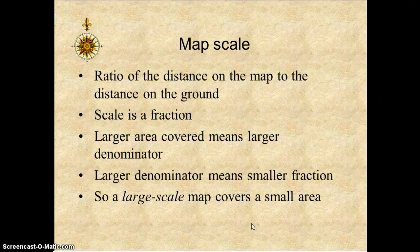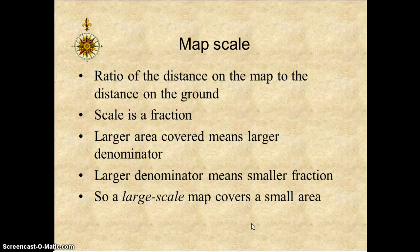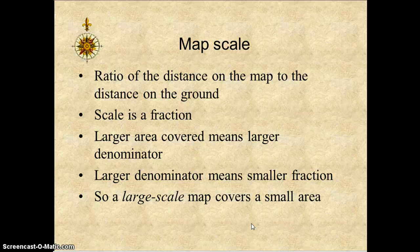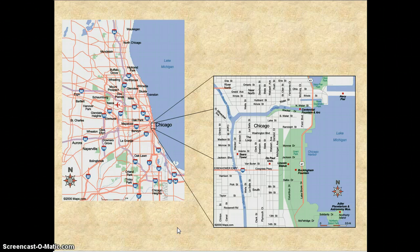Understanding map scale: it is the ratio of the distance on the map to the distance on the ground. Scale is a fraction. A larger area covered means a larger denominator, and a larger denominator means a smaller fraction. So a large-scale map covers a small area, such as this — we are taking a large view and then breaking it down into a street view.